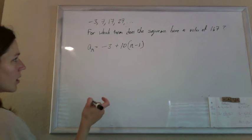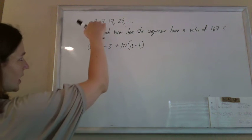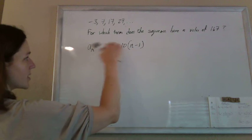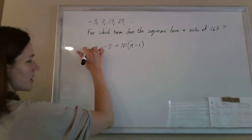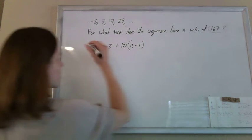Now, here, we don't know what n is. n is like first term, second term, third term. We don't know this, but we know the value of the nth term. That a sub n, the value of the nth term, is 167.